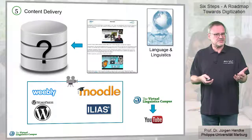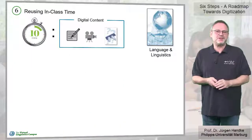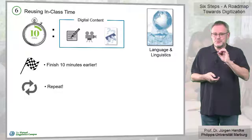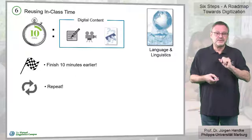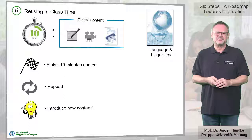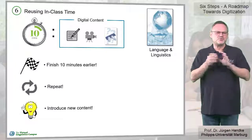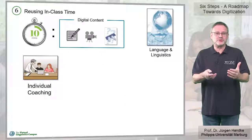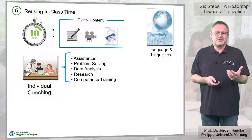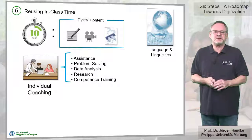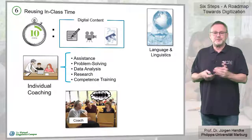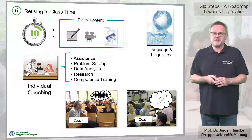And that's it — almost. We have digitized roughly 10 minutes of our previous in-class time. What does that mean? We could reduce in-class time and finish 10 minutes earlier, or simply repeat the digital content, or even introduce new content instead. According to our experience, these options do not lead to a significant benefit. Rather, we should use the 10 minutes for individual coaching — personal assistance, guided problem solving, and so on. In our specific case, we could make available audio files of animal communication and discuss these with our students, or confront our students with image-based animal communication data ready for analysis.